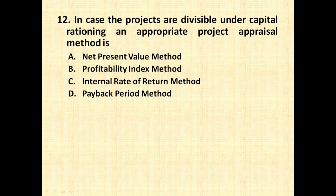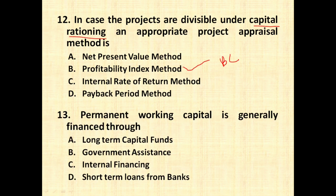The second question is: in case the projects are divisible under capital rationing, what is the appropriate project appraisal method — NPV, profitability index, IRR, or payback period? We know that in the capital rationing method, we use the profitability index method, which is also called the benefit-cost approach. So the right answer is the profitability index method, wherein we use the technique of capital rationing.